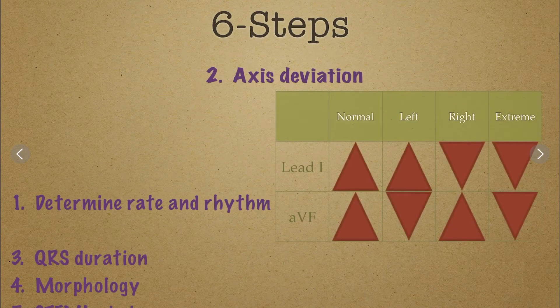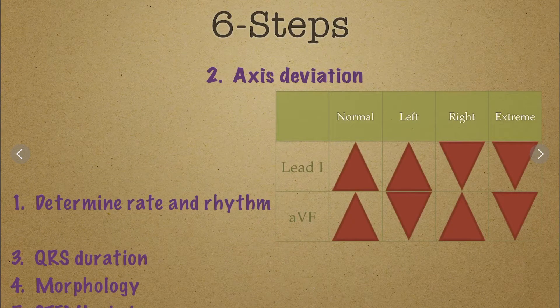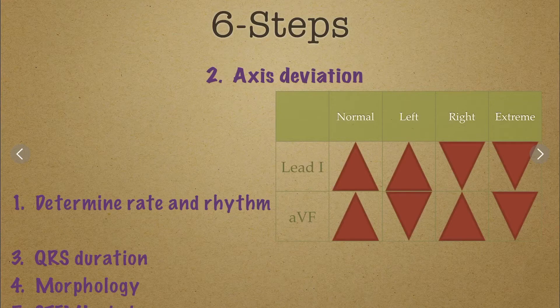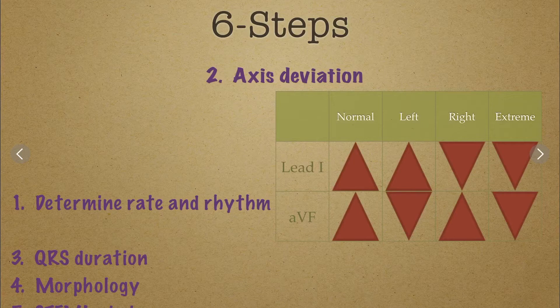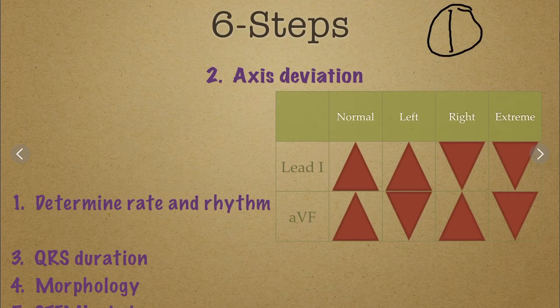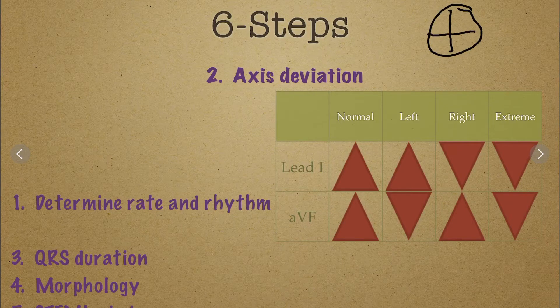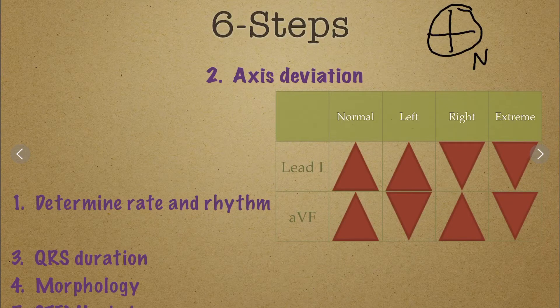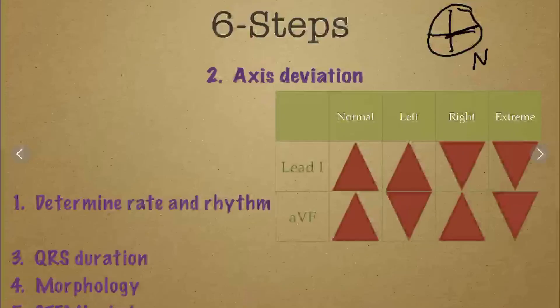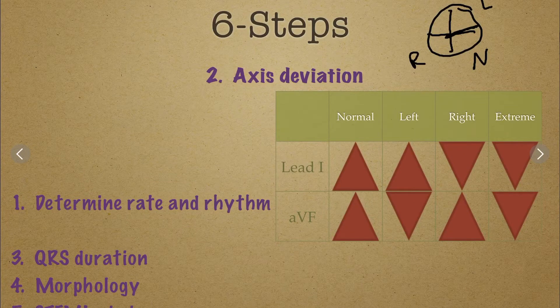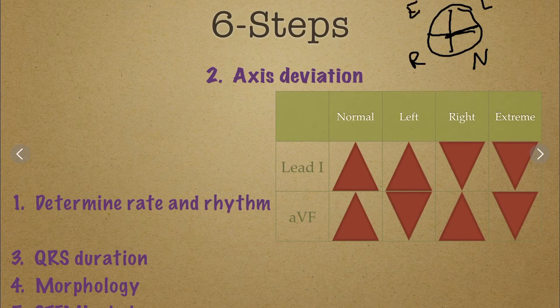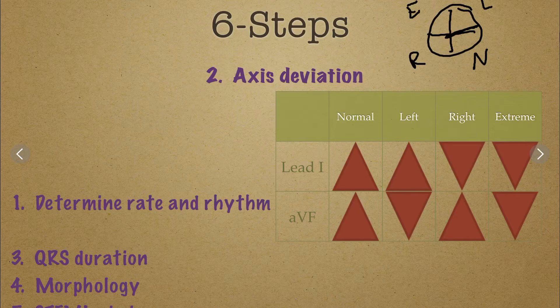After that, I figured out axis deviation. And again, I'd like to use just this up and down thing, looking at leads one in AVF to see if I have it. And I always like to refer back to that quadrant that we have, with this being normal. And there's a little bit of extra there, but this being left, this being right, and then back here is extreme. And figuring out which way is kind of up and down with these.